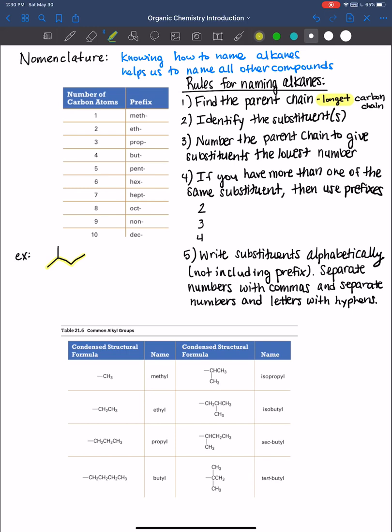And so you also will worry about numbering it in a minute here, but I want you to focus on the prefixes. And these you will need to learn, so if you have one carbon chain, then that's meth, 2 is eth, 3 is prop, 4 but, 5 pent, 6 hex.